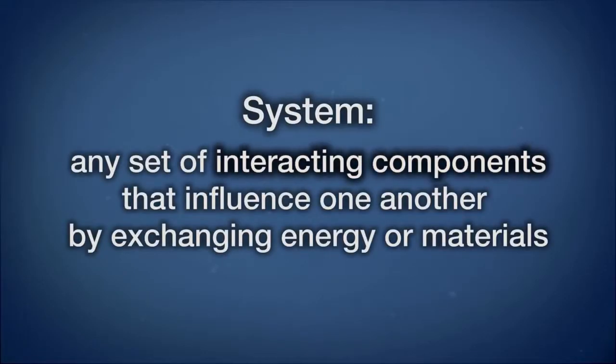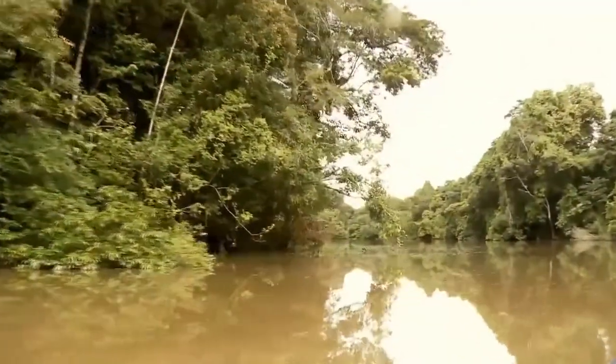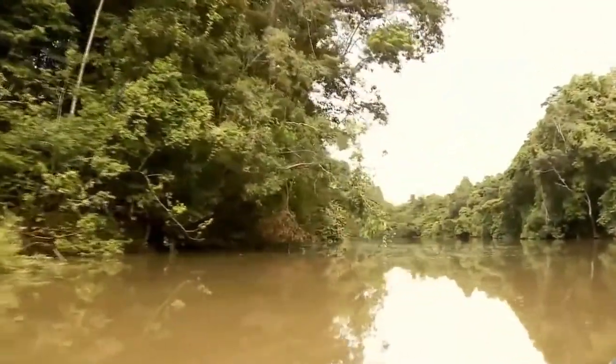Every time you or I use a resource, such as food, water, energy, or materials, we are interacting with environmental systems. A system is any set of interacting components that influence one another by exchanging energy or materials. Systems can be at different scales, such as the subway system in a city versus an ecosystem in the Amazon rainforest versus the global system.